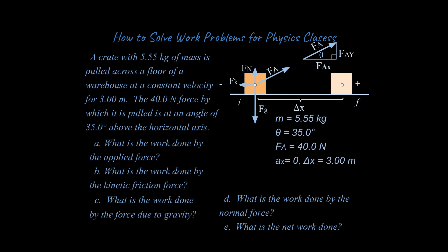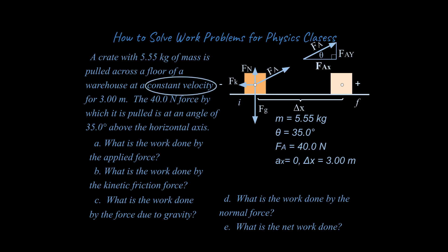Let's take a look at a problem. A crate with 5.55 kilograms of mass is pulled across the floor. There is a displacement through which it's pulled, a force applied at a given angle. The questions ask: what is the work done by the applied force, by the kinetic friction force, by gravity, by the normal force, and what is the net work done? I want to point out what I believe are the two most important words in this problem: constant velocity.